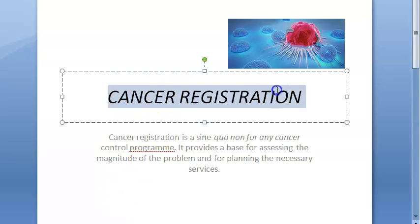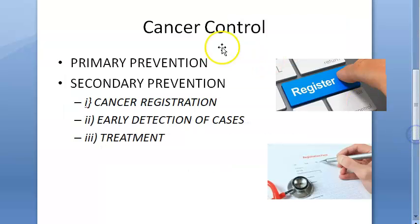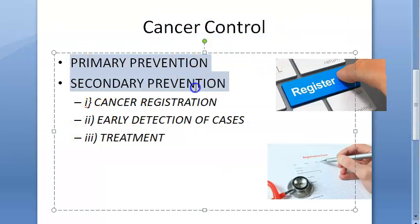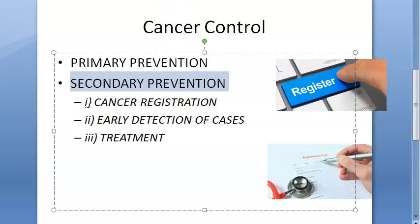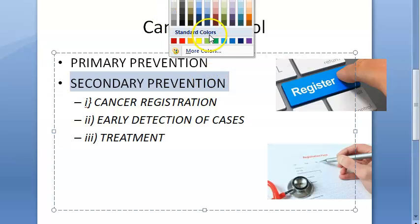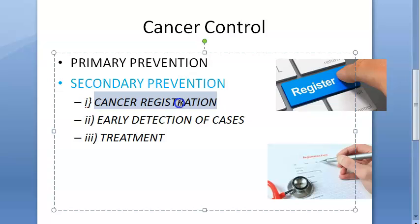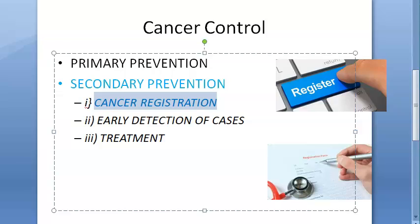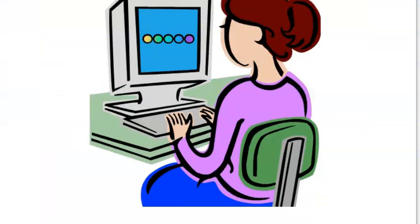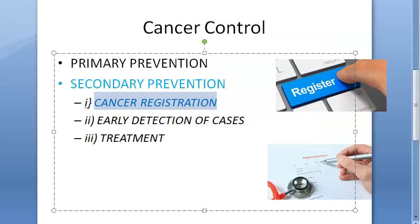Hello, in this video we want to look at cancer registration. In cancer control, you have primary prevention, secondary prevention, and a lot of other preventions — primordial, tertiary, etc. Under secondary prevention, that means the person has got cancer. Under secondary prevention, you have cancer registration. So now that the person has got cancer, you are going to register it. Cancer registration is a secondary prevention measure for cancer control.